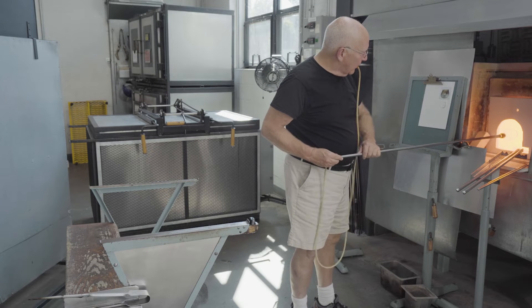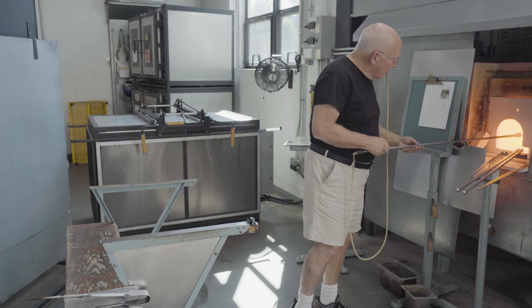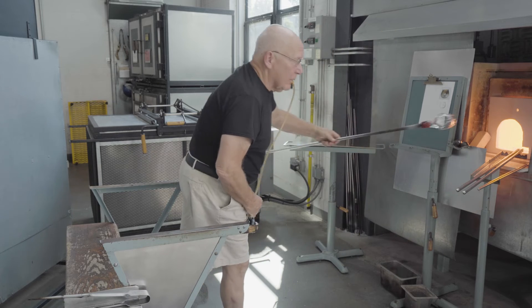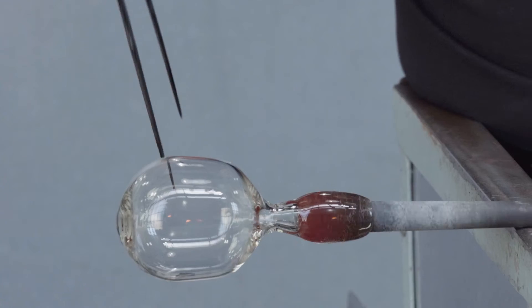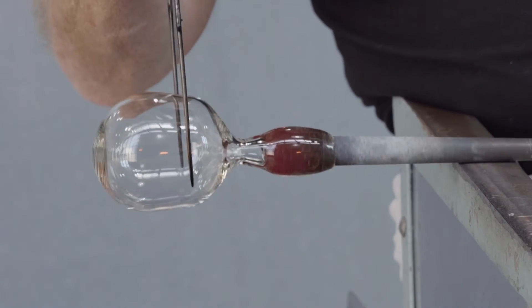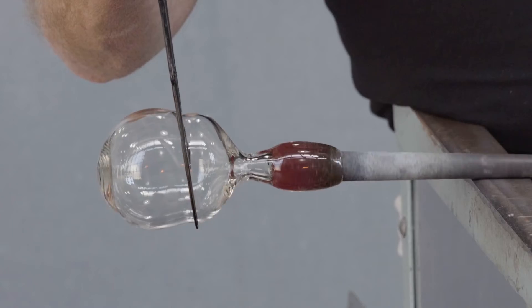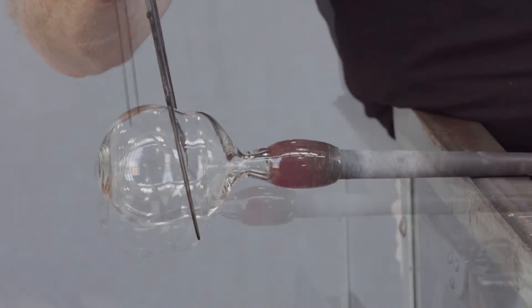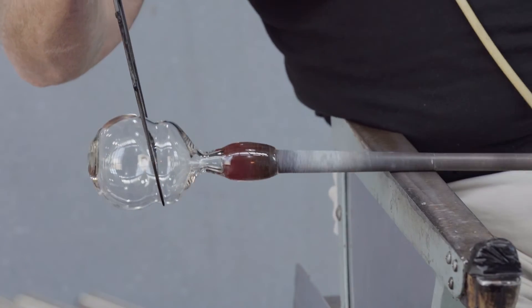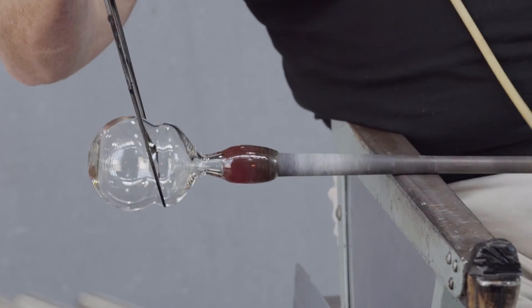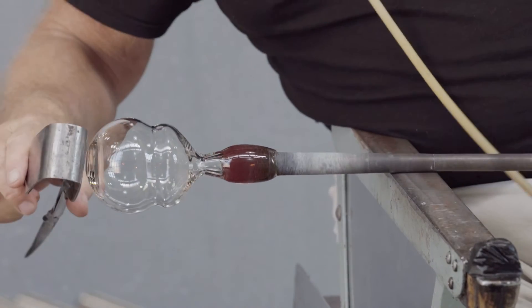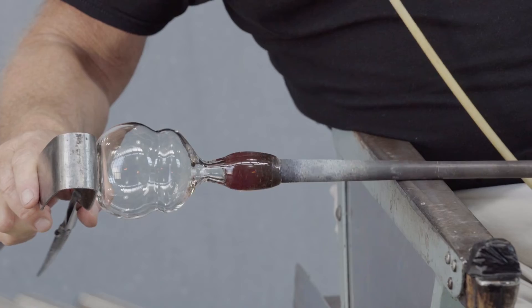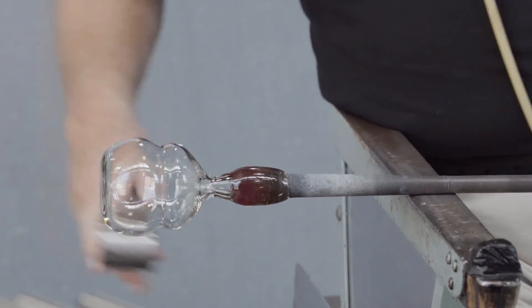And this vessel has another constriction. It's a decorative constriction that will cause the rim to occur at a flared portion of the bubble. But it's also somewhat functional, as we'll see in the cracking-off process.